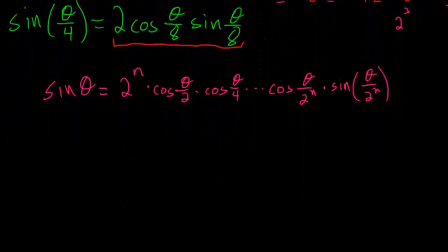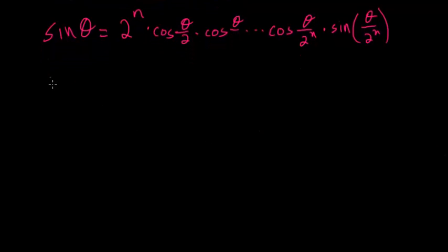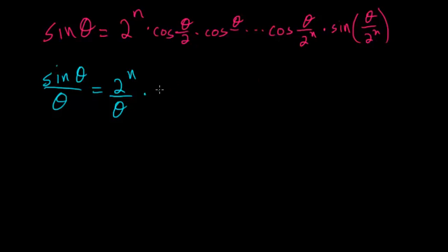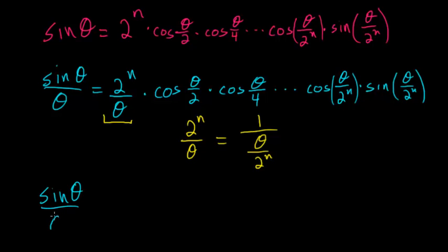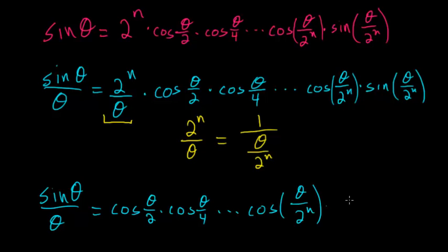Now I would like to divide everything by theta. Dividing by theta gives sine of theta divided by theta equals 2 to the n divided by theta multiplied by each of those cosine terms, times the sine of theta over 2 to the n. The factor 2 to the n over theta can be rewritten as 1 divided by theta over 2 to the n, so the sine of theta over theta equals the product of cosines times the sine of theta over 2 to the n, divided by theta over 2 to the n.